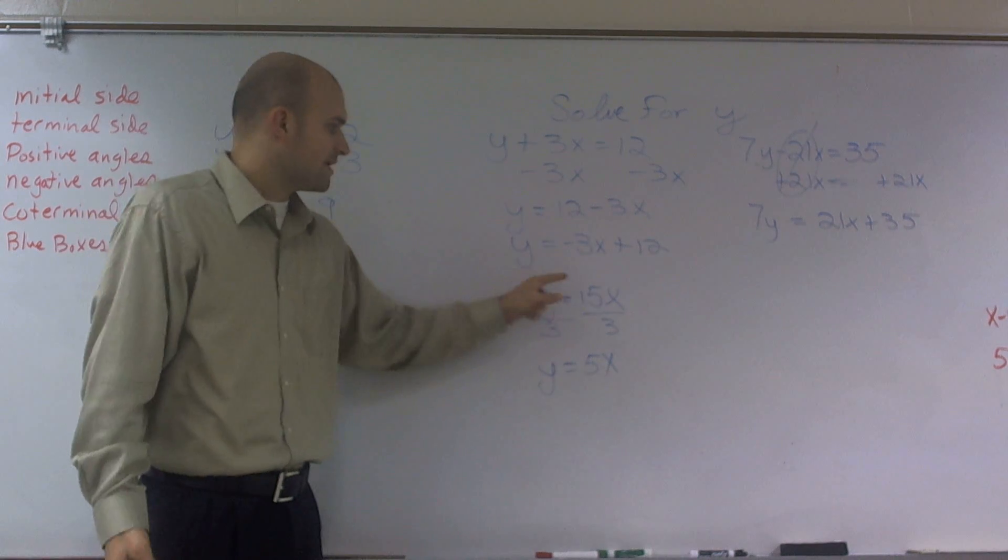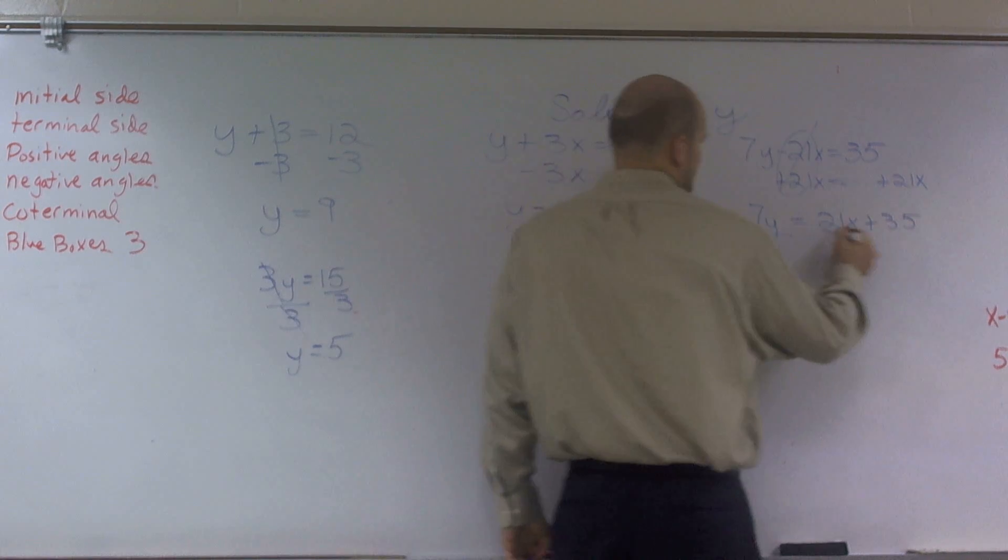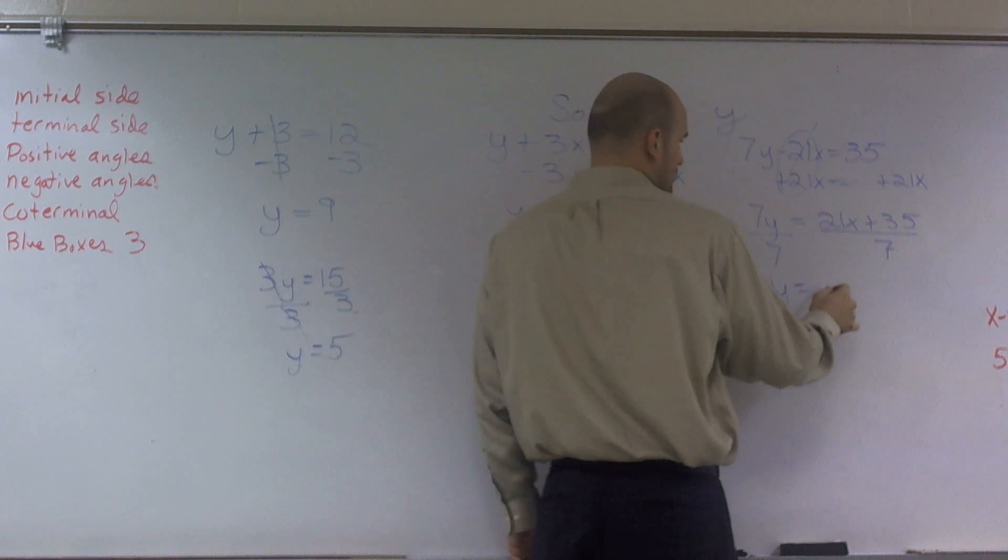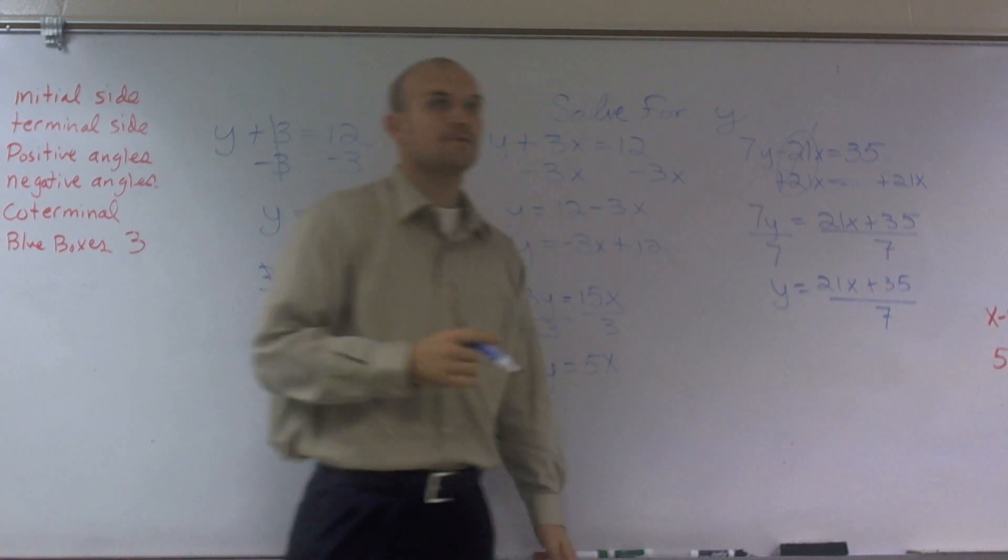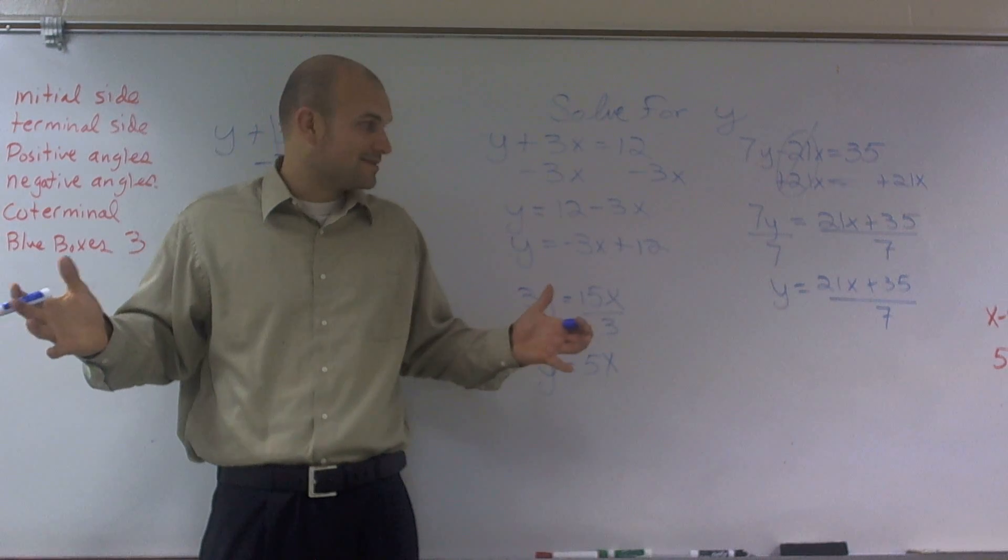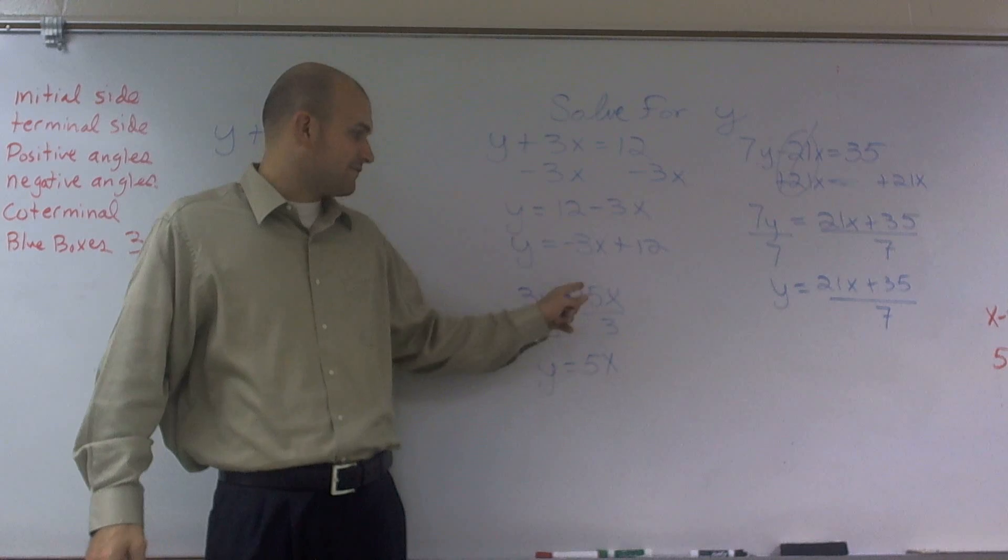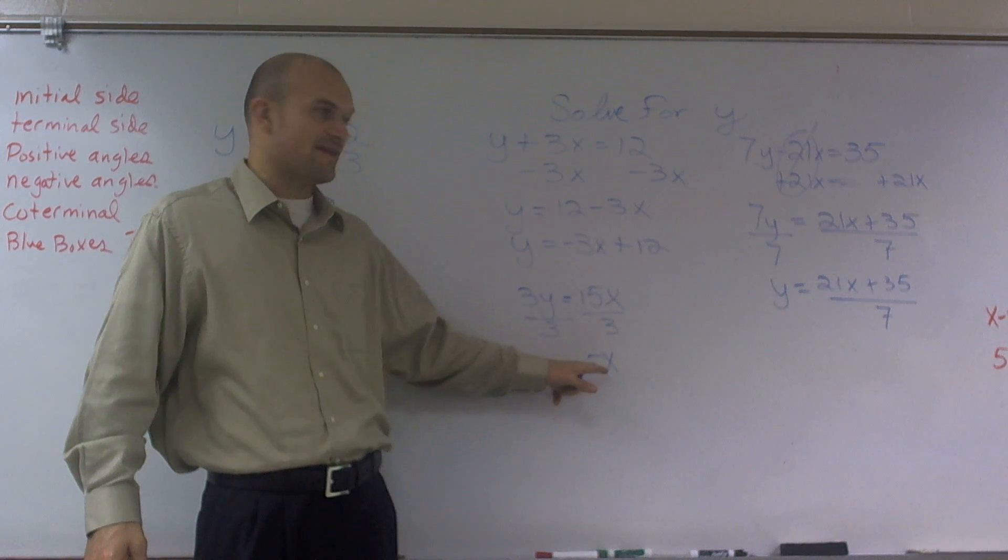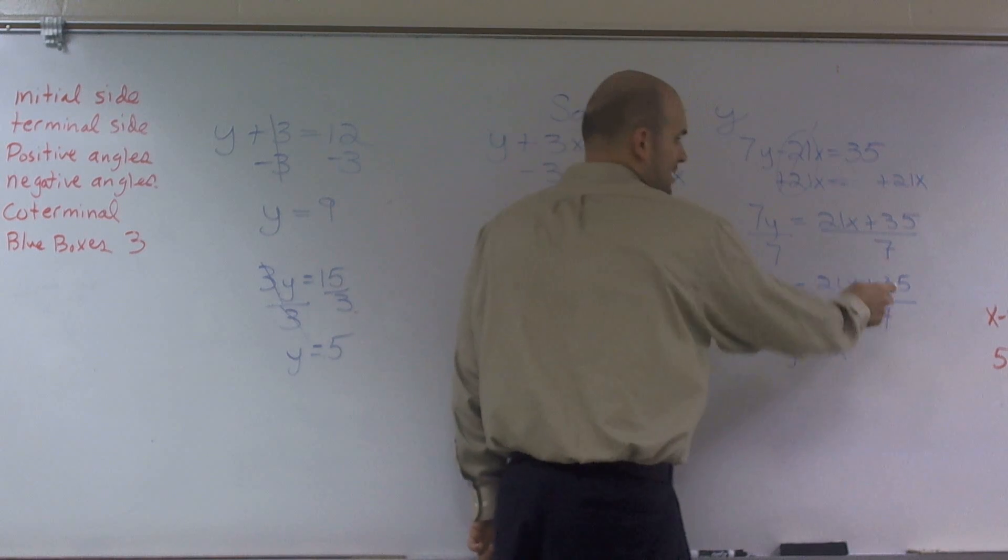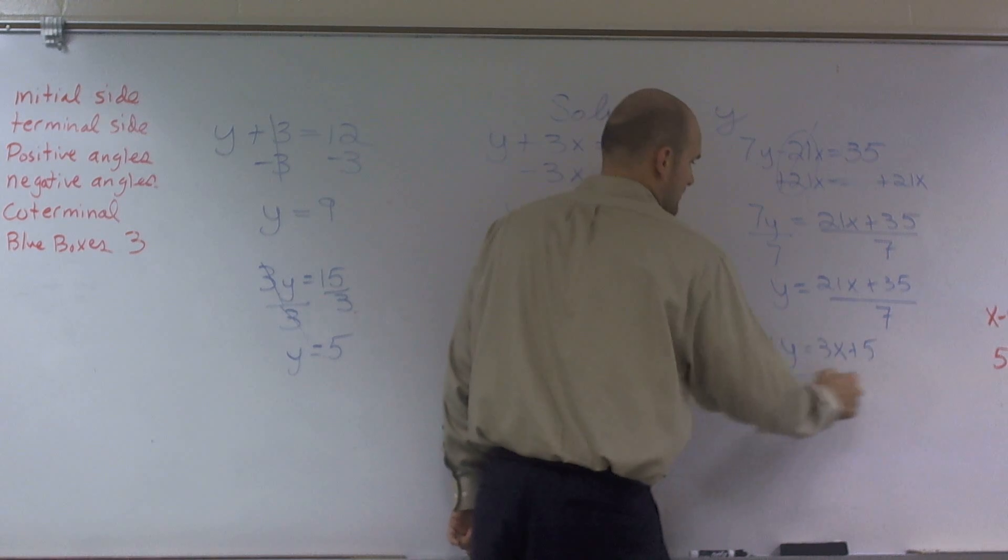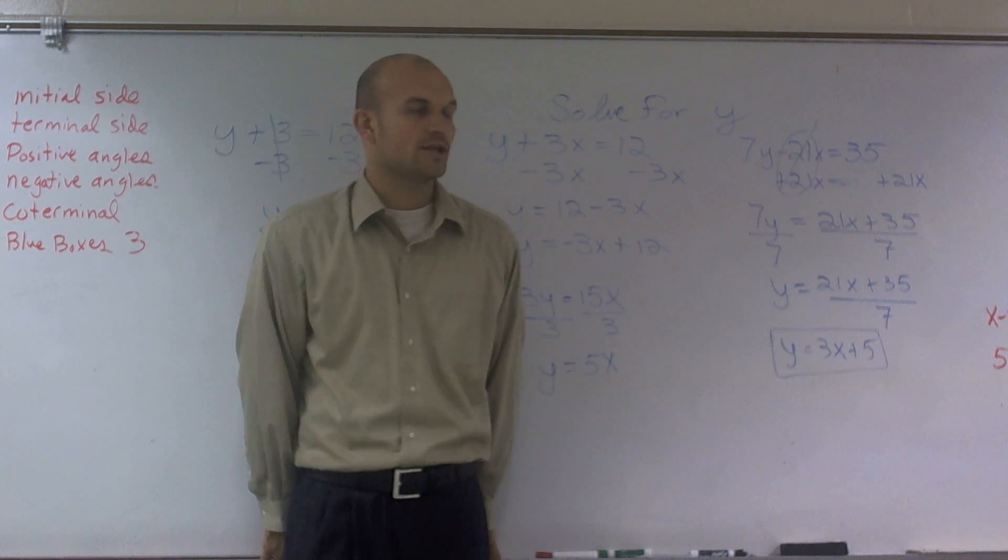Then the next thing is, whenever you have a number in front of your y, we can divide that, right? So I'm going to divide by 7. Therefore, I get y equals 21x plus 35 divided by 7. Now, that's almost the way I want you guys to have it. The last thing I want you guys to do is divide that 7 into both of these terms. And remember, you can do that. 15x divided by 3 gives you 5x. So 21x divided by 7 is going to give us 3x, and 35 divided by 7 equals 5. So that is the simplified version I want you guys to do. And I'll do the other one on a different video.